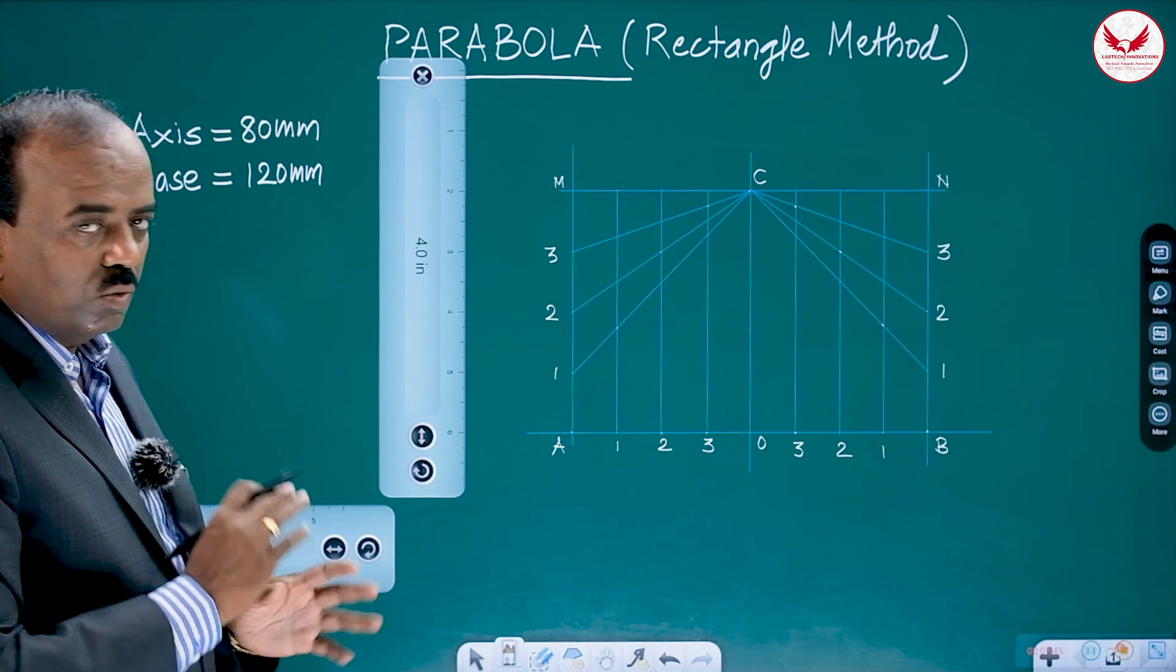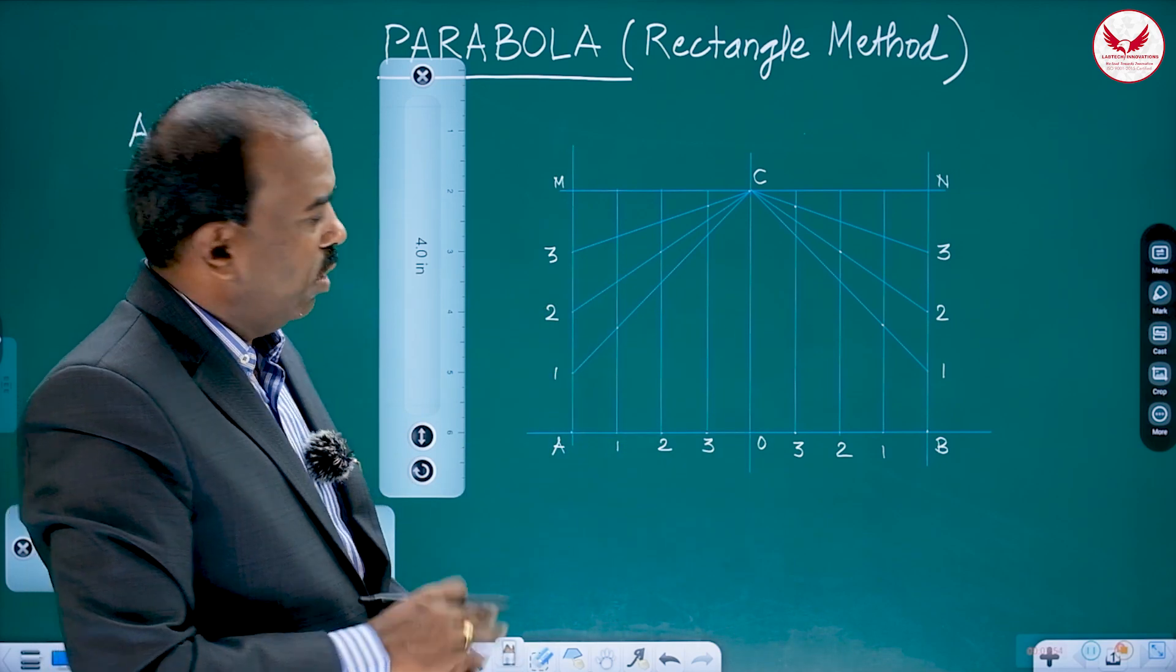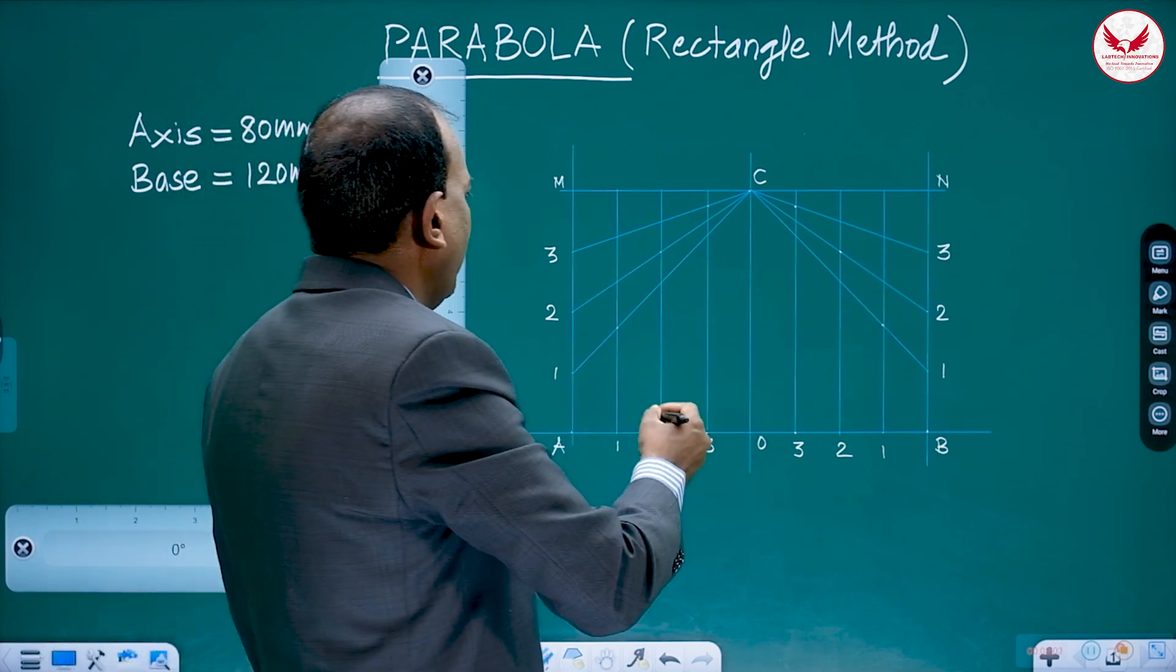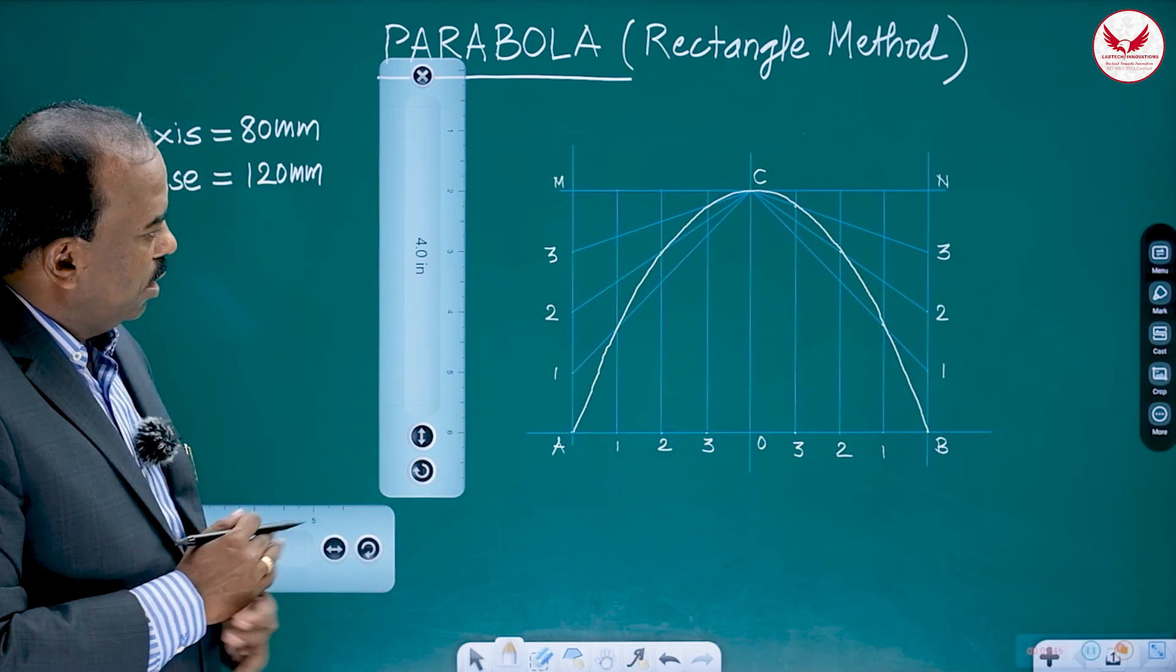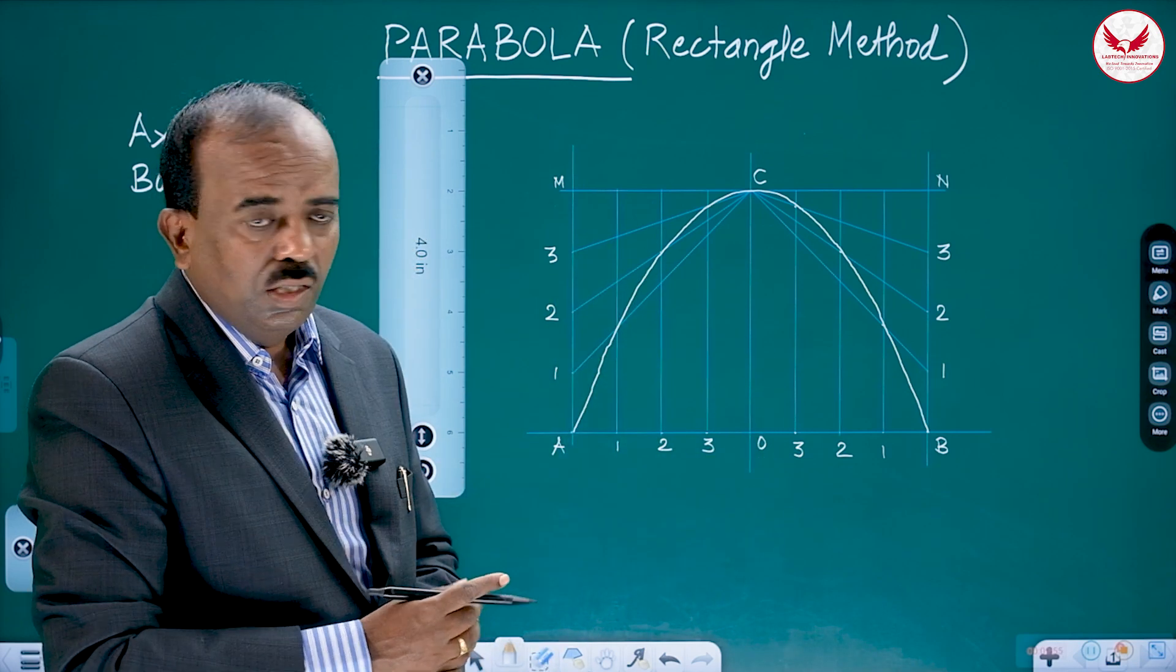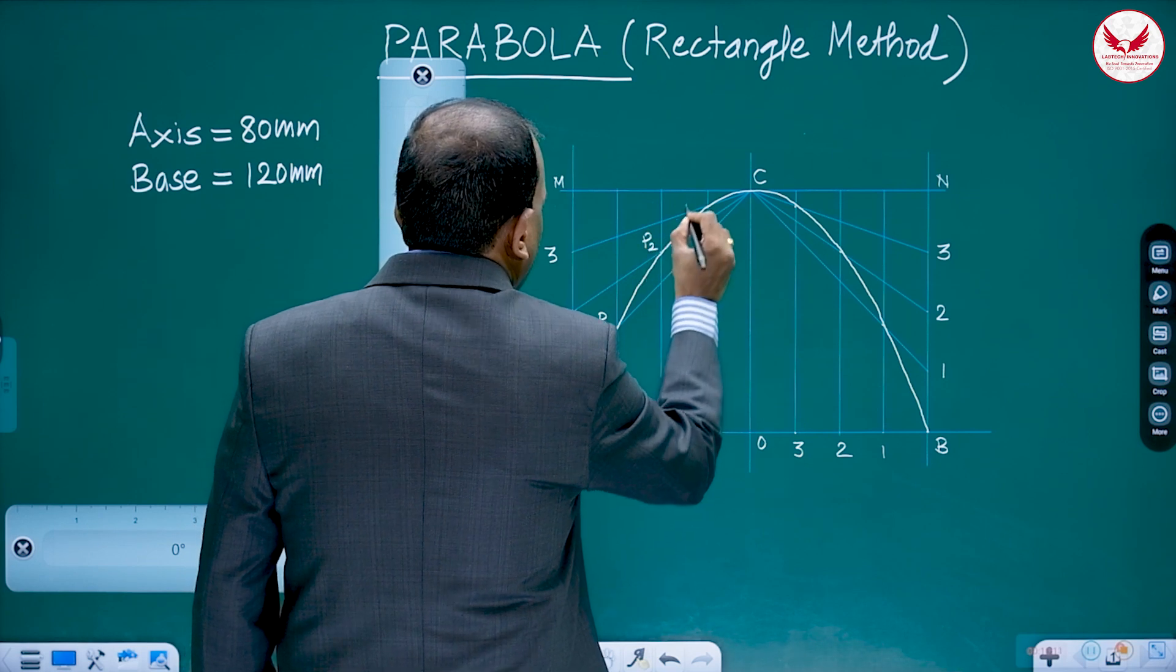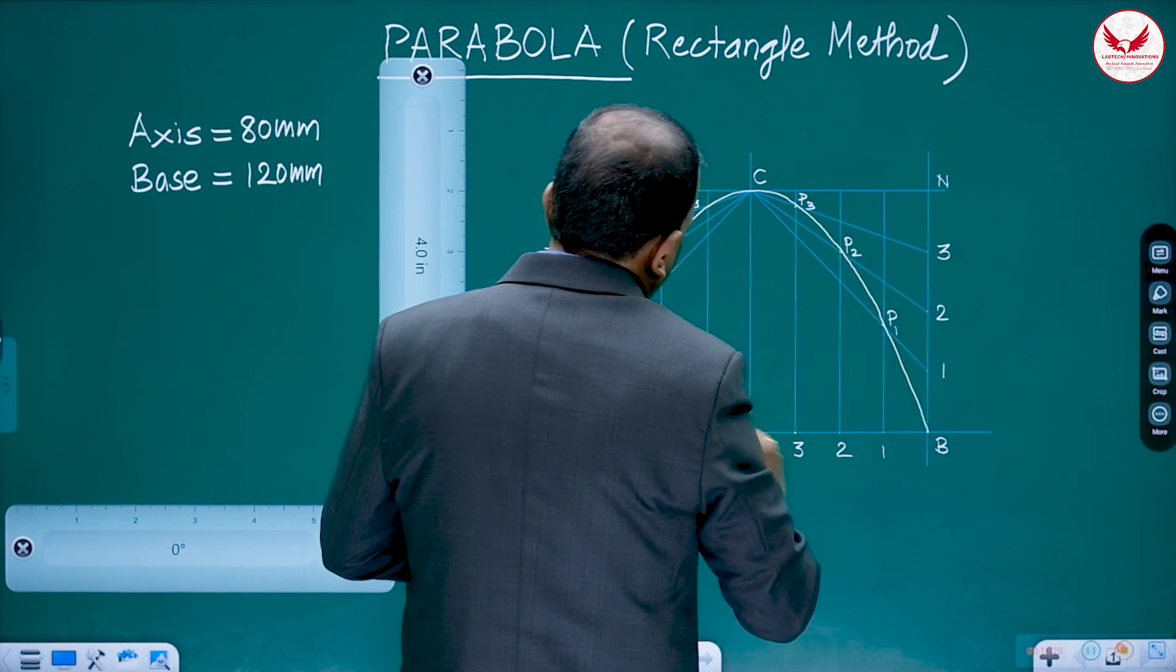And we have to draw the smooth curve passing through these points. Instead of using the French curve, use neatly the freehand curve or draw the confidently freehand curve. When we are drawing, all these points must be in our eyesight. Observe it very carefully how I am drawing this curve. I'll start from A. This is what the parabolic curve passing through all these points. With the help of pencil, you will get very smooth curve. Again, this is the digital board. It is creating the problem. But like this, you have to draw the curve.